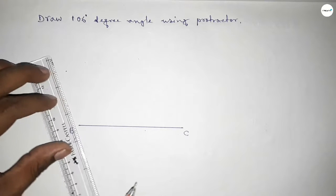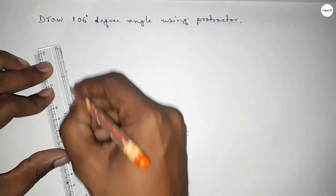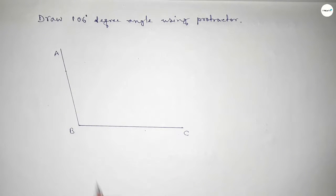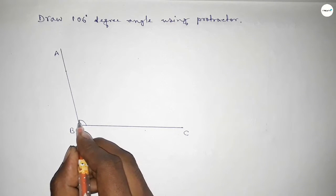Now joining this side to get the 106-degree angle and taking here point A. So angle ABC...